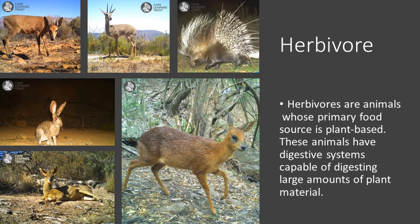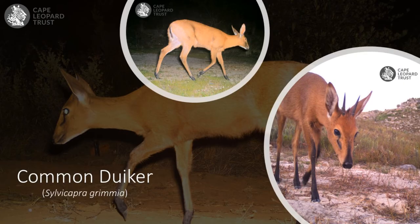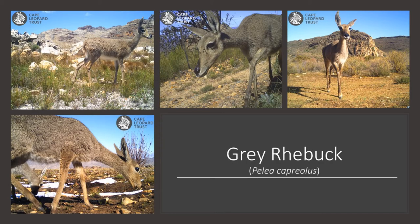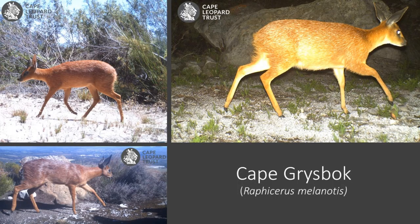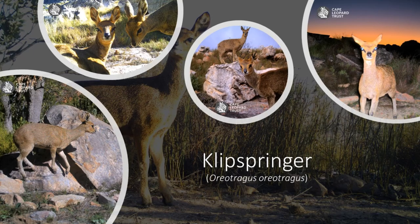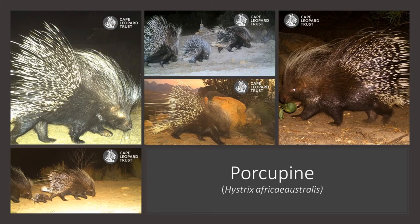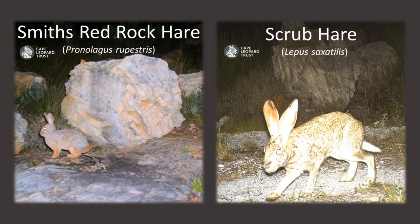Examples of herbivores are Common Duiker, Grey Rhebok, Cape Grysbok, Klipspringer, Porcupine, Smith's Red Rock Hare, and Scrub Hare.